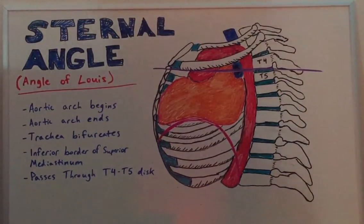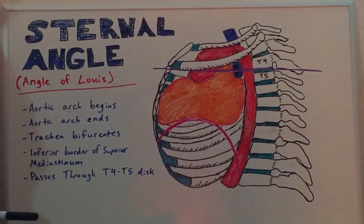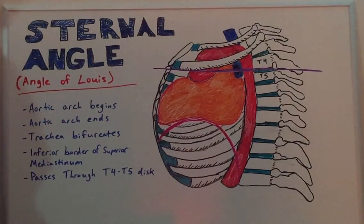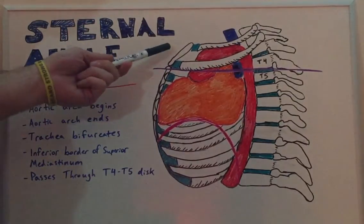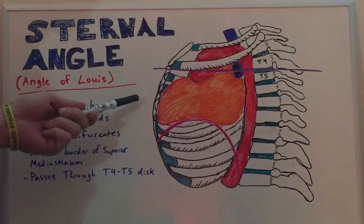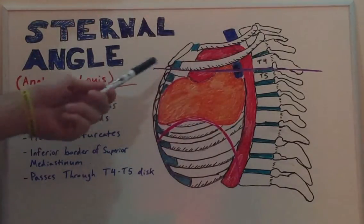Today's lecture is on the sternal angle, or the angle of Louis. As we can see from this diagram, this landmark on our anterior thorax demarcates the juncture of the manubrium, the sternum, and the second rib.